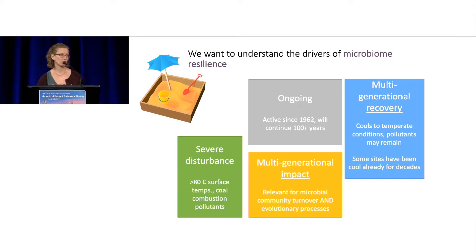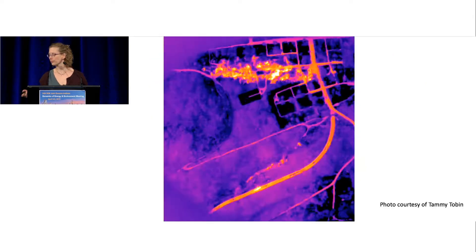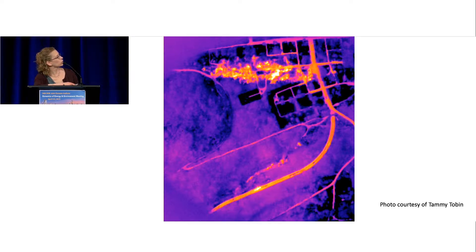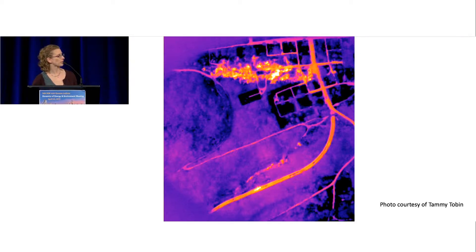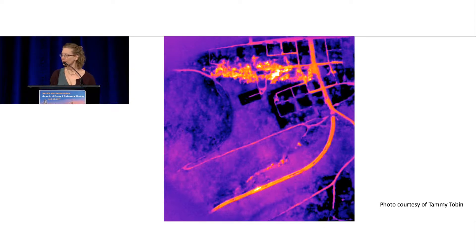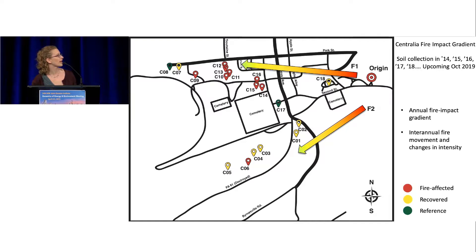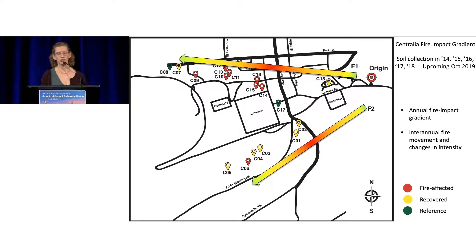This is an aerial infrared image of Centralia taken in the early 2000s, courtesy of my collaborator Tammy Tobin. There are two fire fronts: fire front one and fire front two, with the origin of the fire here where old Route 61 used to be — it fissured from the pressure of the fire underneath and was decommissioned. Front one is still active today. We went out for the first time in 2014 after I started my new lab, and this animation shows how the fire has progressed.